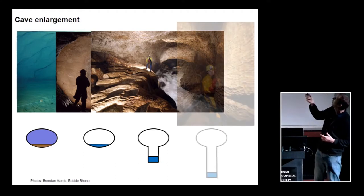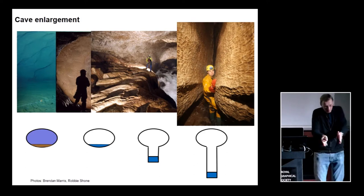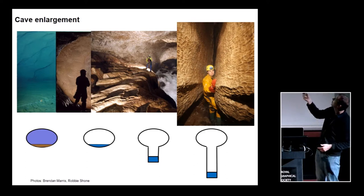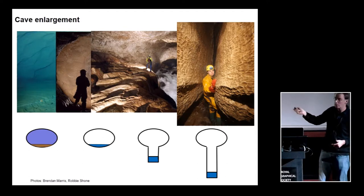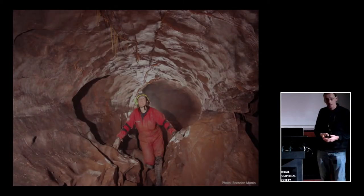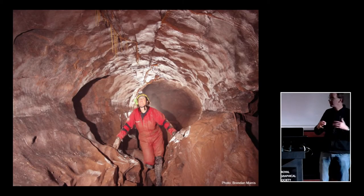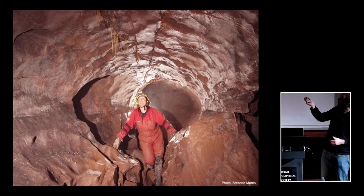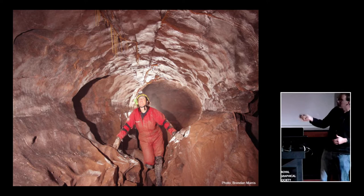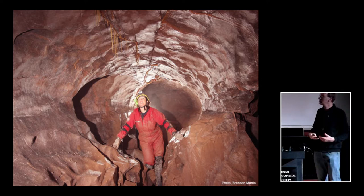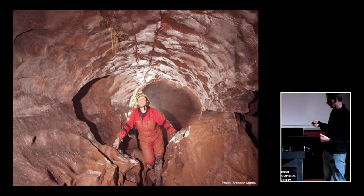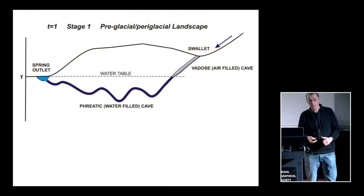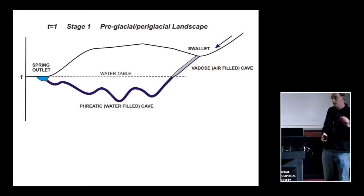Eventually you get to a point where all you see is a very narrow vadose trench and you have to climb up into the roof to actually see the phreatic tube. So this is your classic keyhole-shaped passage. And you often see this, so if you just use your eyes when you're going caving and have a look around, you can often see this kind of typical passage morphology. There's your phreatic tube and then there's your vadose trench beneath. So straight away, you can begin to see things in the cave that can actually tell you about how the cave formed.